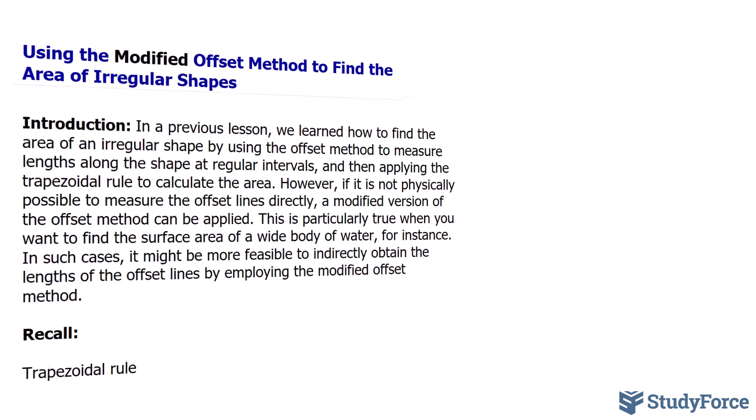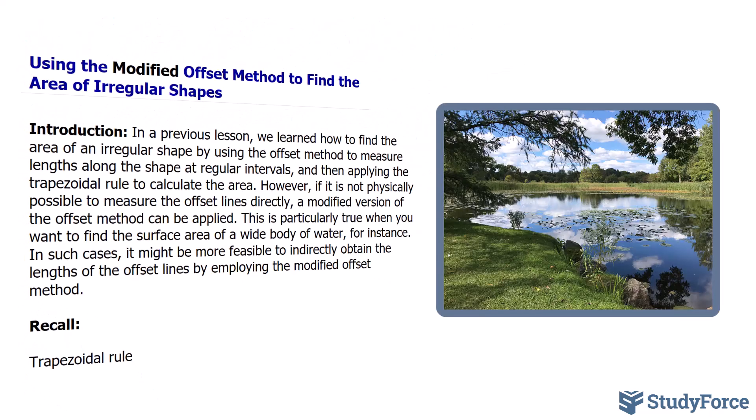This is particularly true when you want to find the surface area of a wide body of water, for instance. In such cases, it might be more feasible to indirectly obtain the lengths of the offset lines by employing the modified offset method.